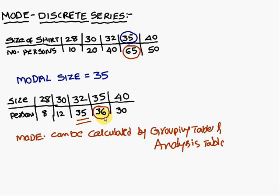If you consider 35 also is nearer to the highest frequency. Therefore this is ambiguous. Therefore you cannot say that 35 is the MODEL size.